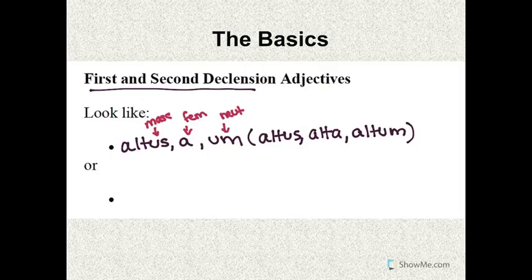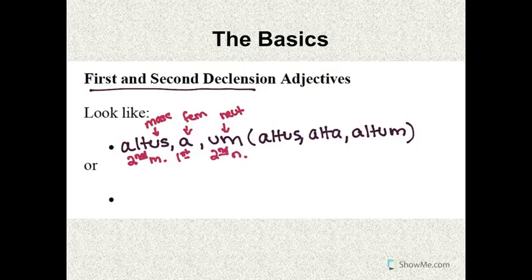So, if you are declining an adjective to agree with a masculine noun, you're going to use this us form and follow along in the second declension masculine pattern. If it's going to agree with a feminine noun, you're going to use this alta form and use the first declension pattern. And if you're going to agree with a neuter noun, you're going to use the altum form and use the second declension neuter pattern.